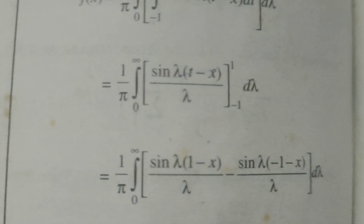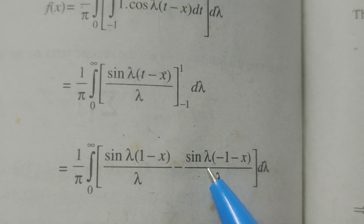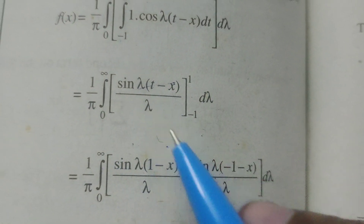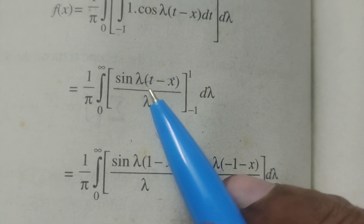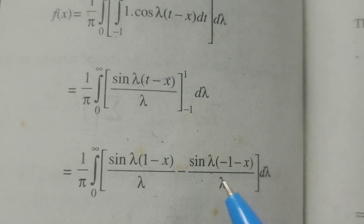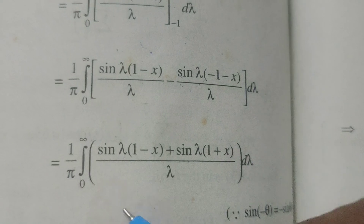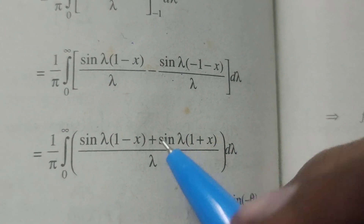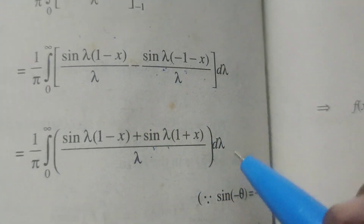Substituting the upper limit t = 1 and lower limit t = −1: we get (1/π) · integral from 0 to ∞ of [sin(λ(1 − x)) / λ − sin(λ(−1 − x)) / λ] dλ. Since sin(−θ) = −sin θ, this becomes (1/π) · integral from 0 to ∞ of [sin λ(1 − x) + sin λ(1 + x)] / λ dλ.